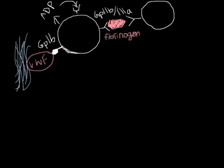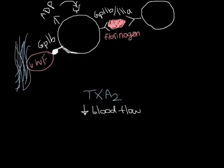Now activated platelets will release thromboxane A2. This causes a down-regulation of blood flow and at the same time an up-regulation of platelet aggregation. So these are pro-aggregation factors.